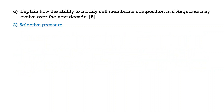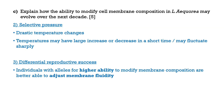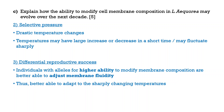Next is the selective pressure. In the context of the question, there are drastic temperature changes in the Arctic, so that would be the selective pressure. It didn't specify increase or decrease, so it could be a large increase, large decrease, or up-and-down fluctuation — regardless, changes in temperature are the selective pressure. Individuals with a higher ability to modify their membrane composition would be able to adjust or modify their membrane fluidity better, and membrane fluidity helps individuals adapt to different temperatures.